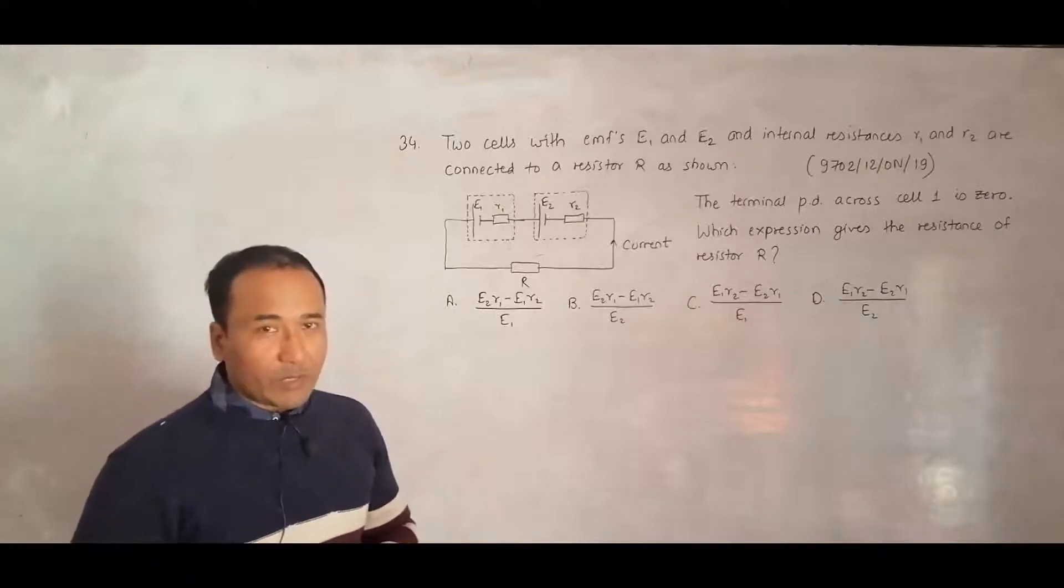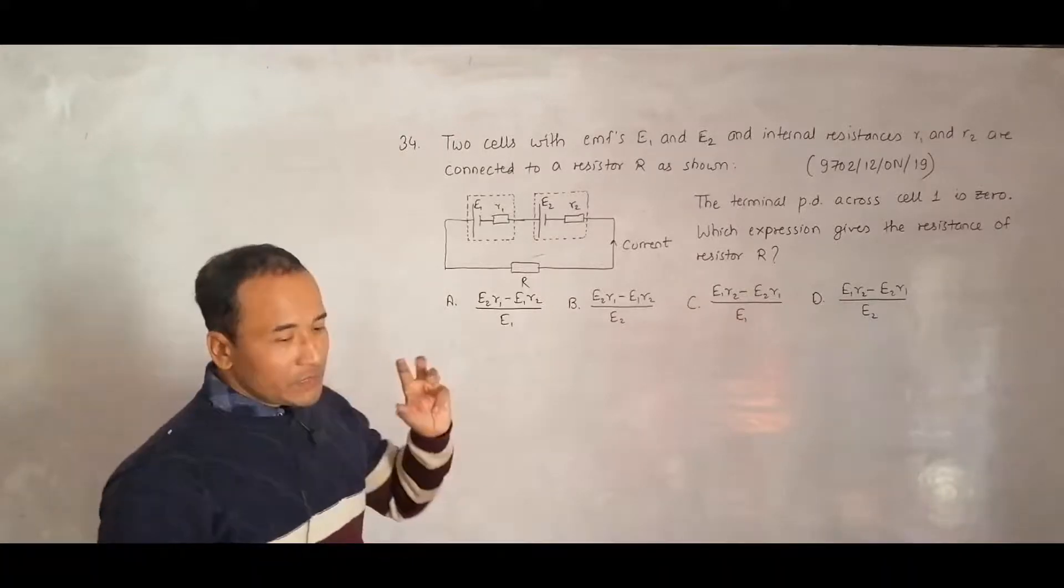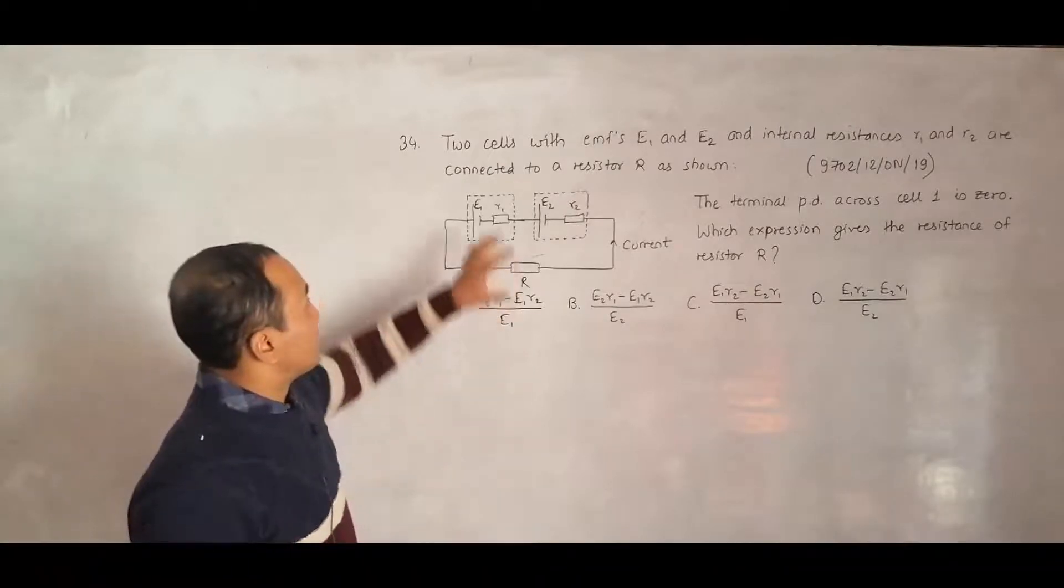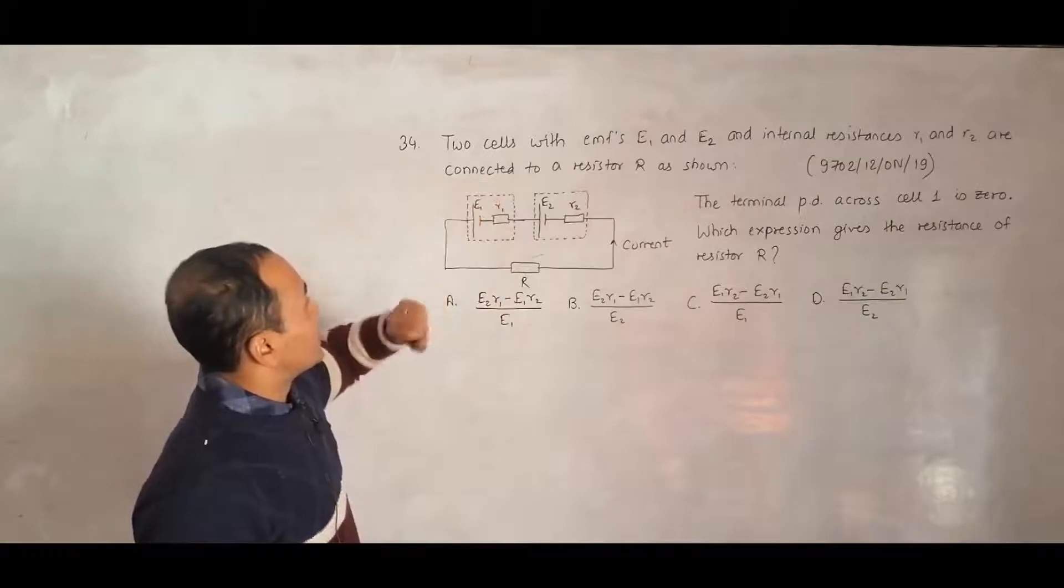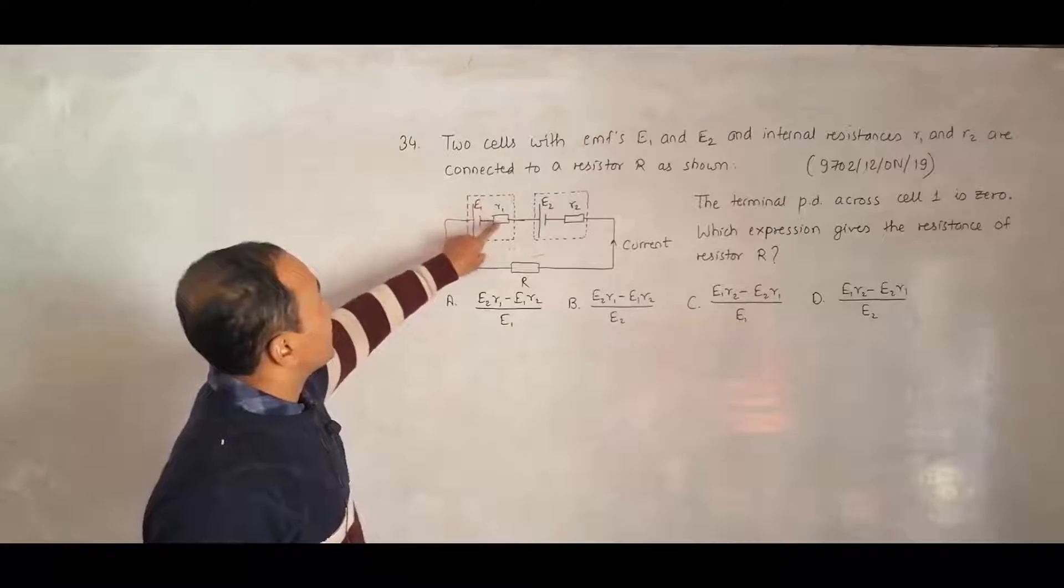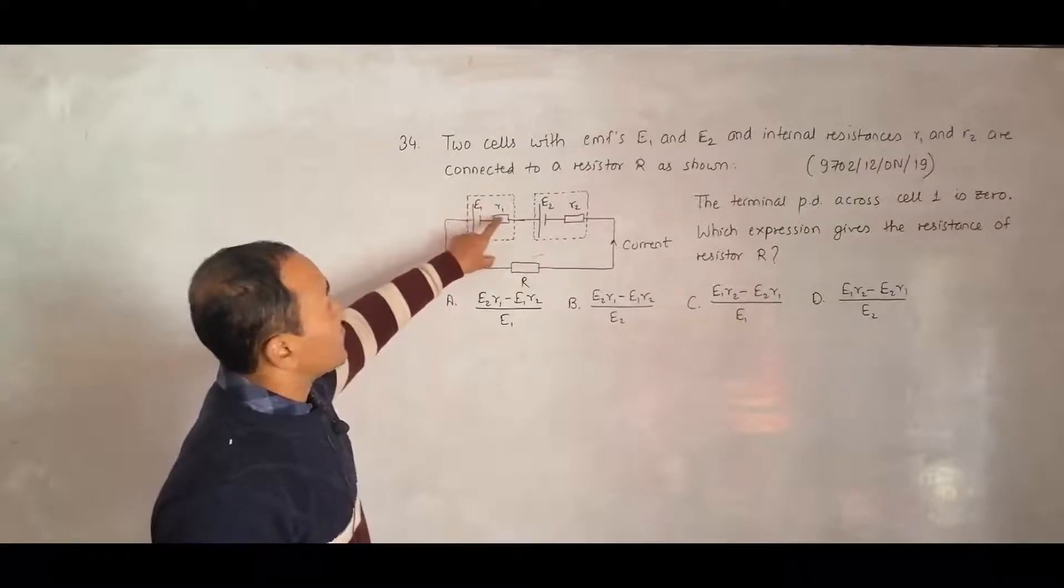As you might be aware in our A-level, we will denote the cells or power sources with internal resistances as this box here, which is enclosed by dotted lines. This E1, this R1 belongs to it, it is the internal resistance.